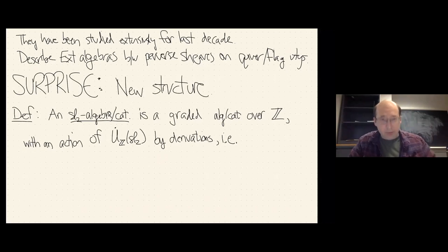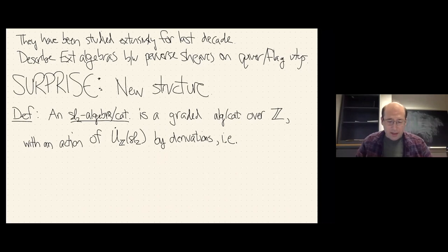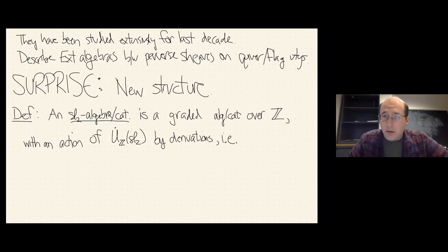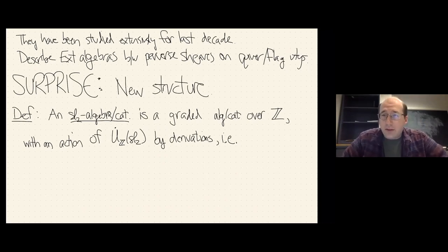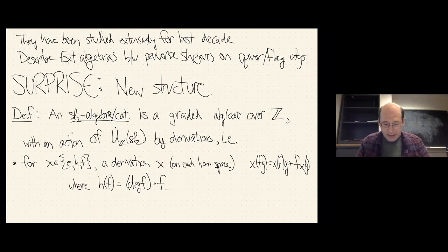This new structure was noticed in part previously by Khovanov, Rozansky, and others. Here's a definition: an SL2 algebra, or SL2 category, is a graded algebra over the integers which has an action of the integral form of SL2 by derivation. The Lie algebra sl2 acts by derivation — you've got raising operators and lowering operators: E, H, and F as usual for SL2.